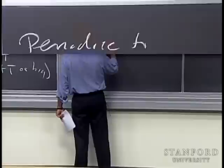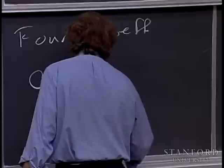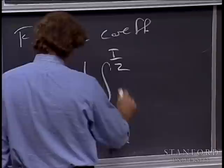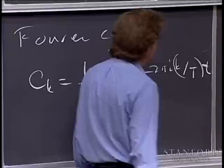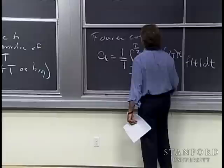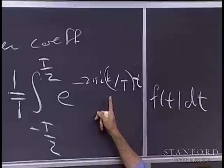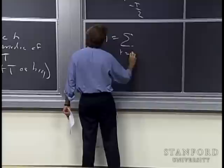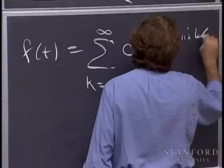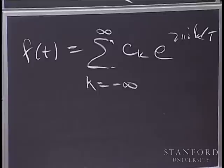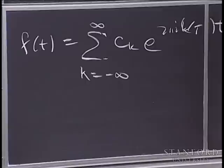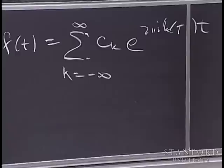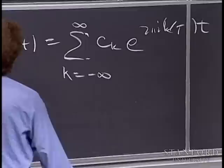Think of T as big, and eventually we think of T as going off to infinity. You can write down the formula for the Fourier coefficient and the Fourier series. The Fourier coefficient C_k is 1 over T times the integral from minus T/2 to T/2 of e to the minus 2πi(k/T)t f(t) dt. The Fourier series recovers the function as a sum from minus infinity to infinity of C_k times e to the 2πi(k/T)t.